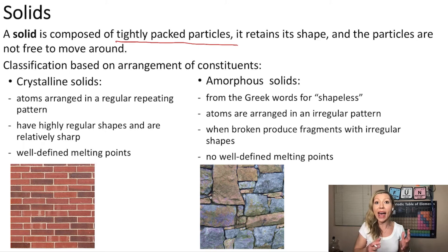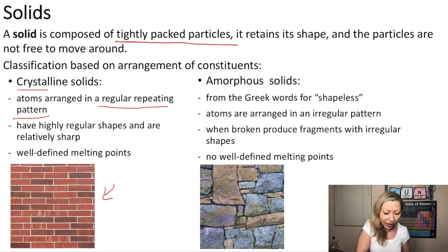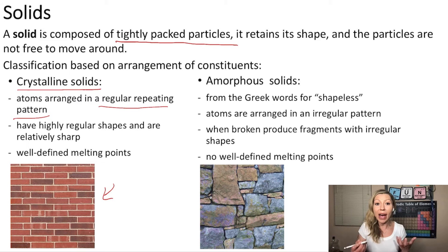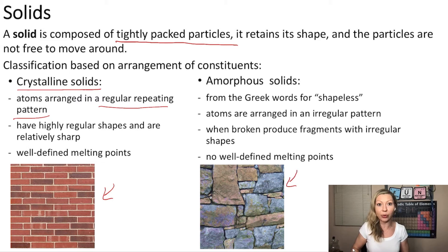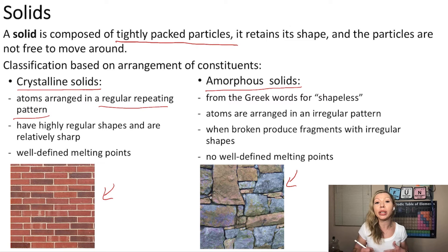We can have atoms arranged in a regular repeating pattern just like this nice brick wall here, and those would be solids called crystalline solids. And if the pattern is irregular just like this wall shown right here, those are going to be amorphous solids. The name amorphous comes from the Greek word meaning shapeless.